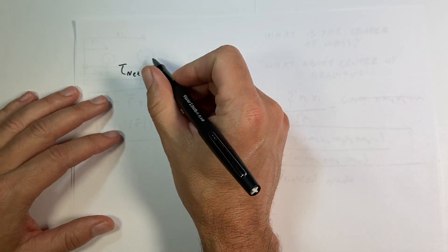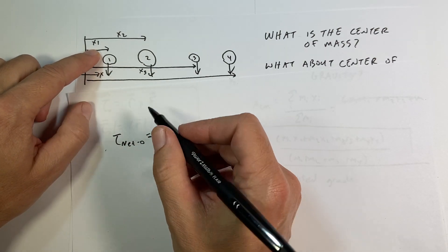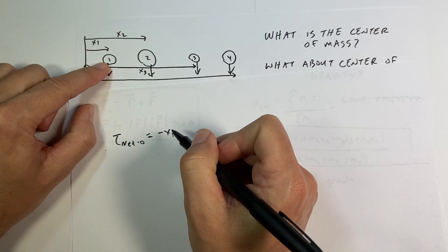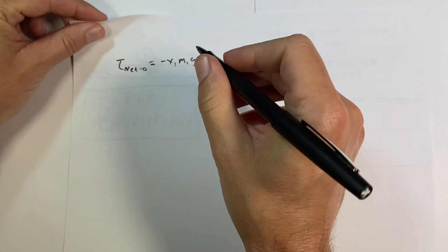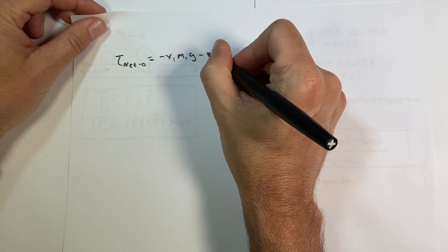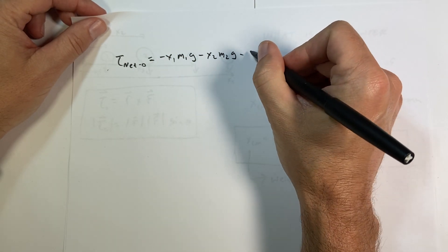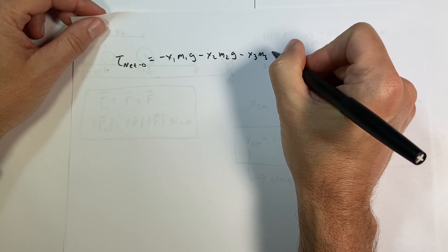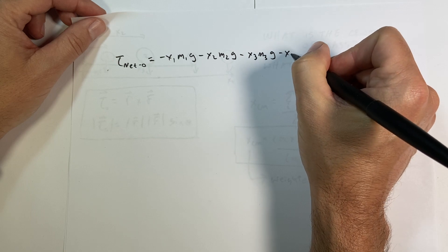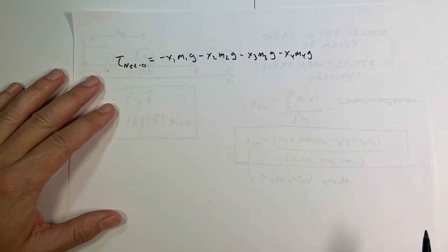So I get the torque due to this one's going to be negative x1 times its weight, m1g. And then I can do the other ones, and I get negative x2 m2g, negative x3 m3g, negative x4 m4g.